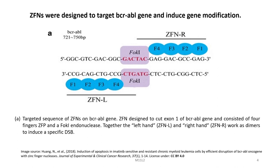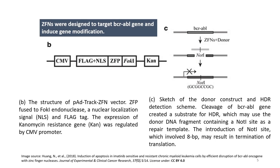In figure A, you can see the targeted sequence of ZFN on the BCR-ABL gene. The ZFN was designed to cut exon 1 of BCR-ABL gene and consisted of four zinc fingers and a FokI endonuclease — the left-hand and right-hand work as dimers to induce the specific DSB. In figure B, you can see the structure of the pAD-Track ZFN vector, where ZFP was fused to FokI nuclease, a nuclear localization signal and the flag tag.